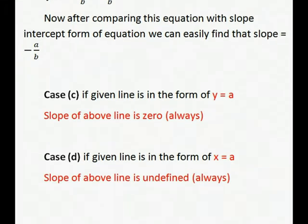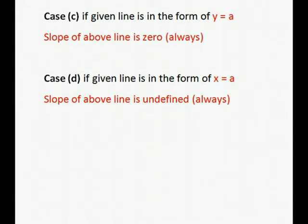Now third subcase (c): if we have given a line in the form of y equals a, this is the equation of horizontal line and in this case slope is always 0.